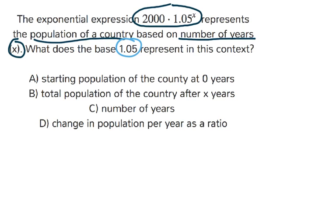Let's go through the answers here and see which one matches. A, the starting population of the country at 0 years. Well, if you plug in that 0 into the x, because that's the years, you'd get 1.05 to the power of 0, which would become 1. And so your starting population would become the 2,000. So the starting population is 2,000. It doesn't really have anything to do with that 1.05 yet.